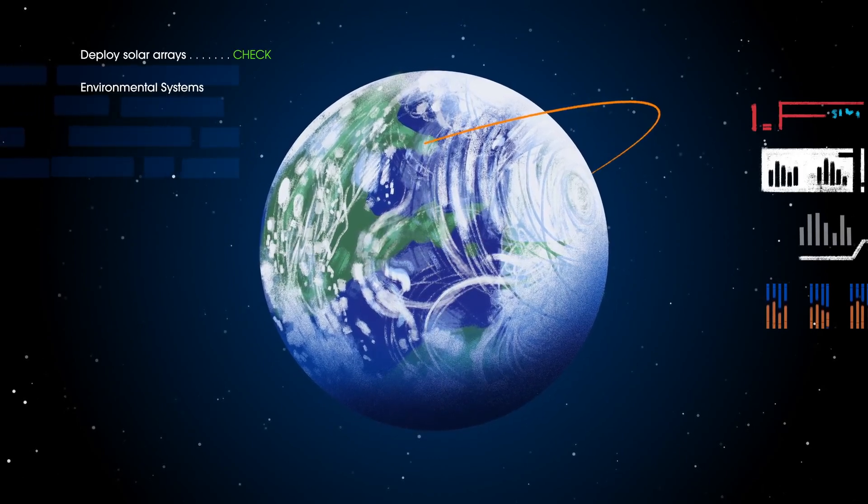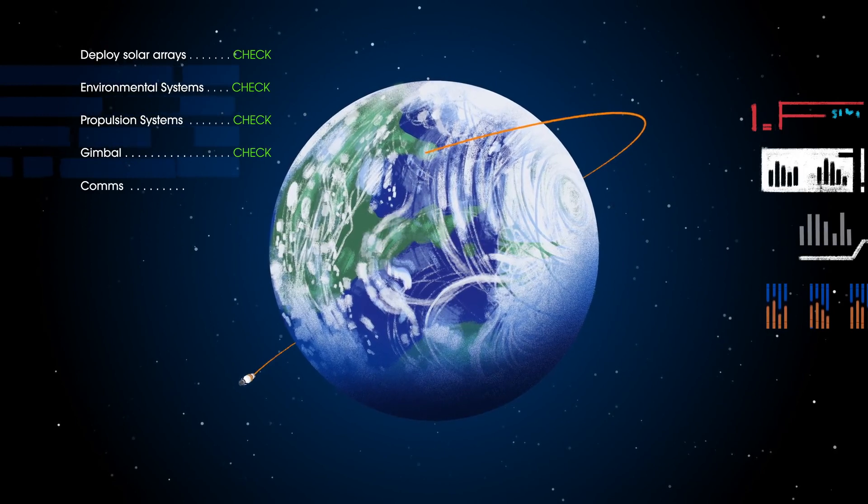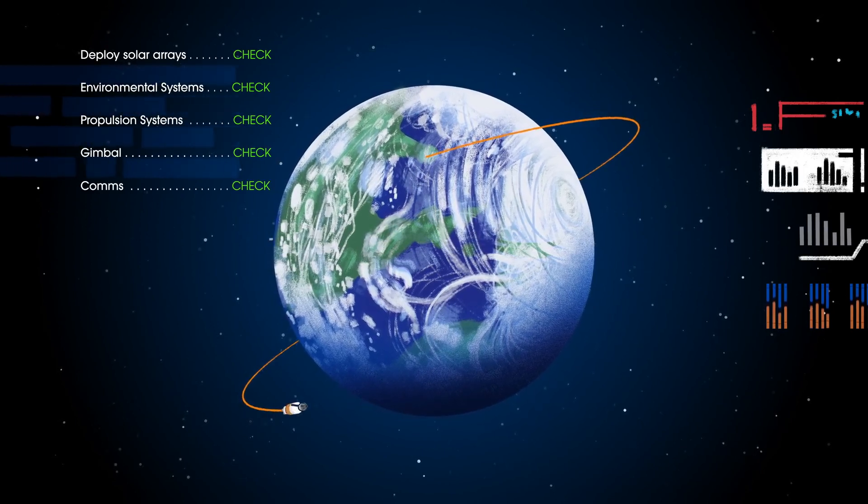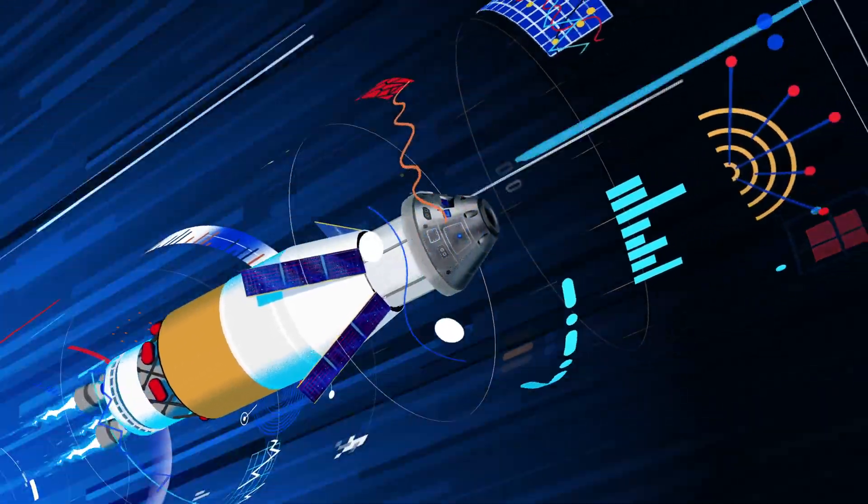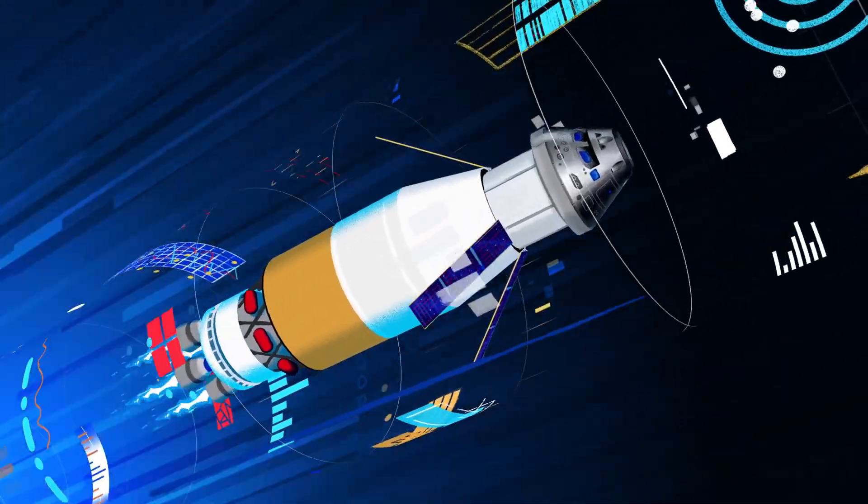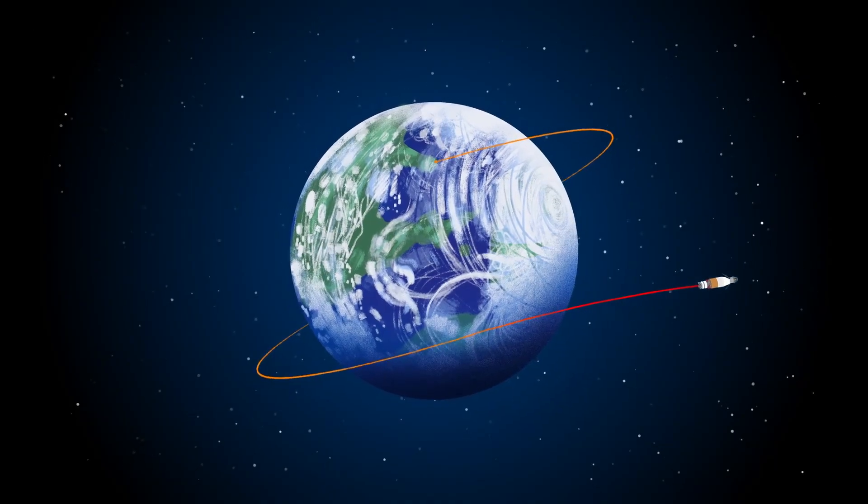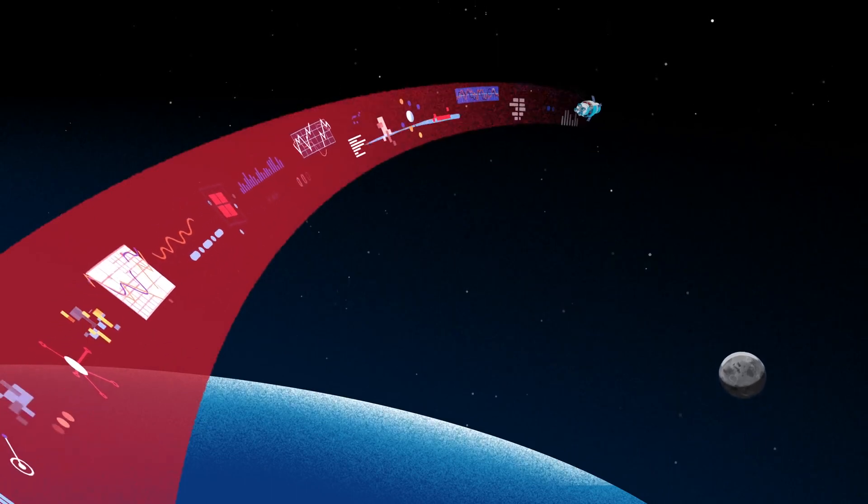Here, the crew reconfigure the spacecraft and check systems to confirm everything is ready for deep space travel. With a go from mission control, the crew reignite the exploration upper stage engines to leave Earth entirely. The exact timing of this maneuver is critical to reach a speed that can escape Earth's gravitational pull, but also put Orion on a course that will intersect the Moon days later.